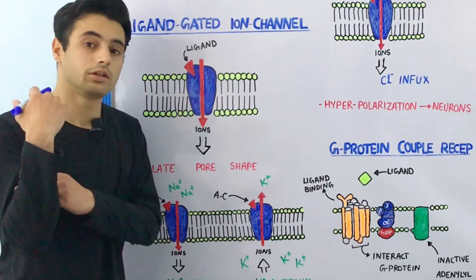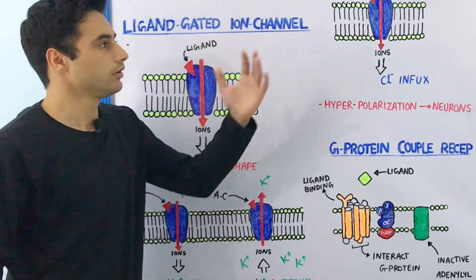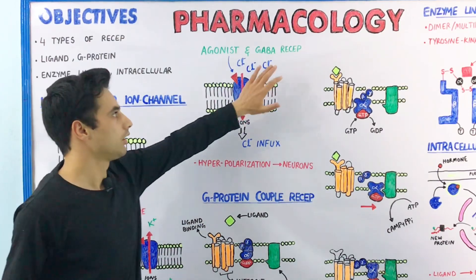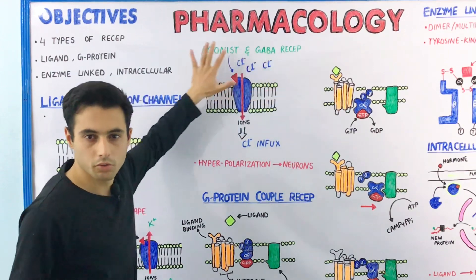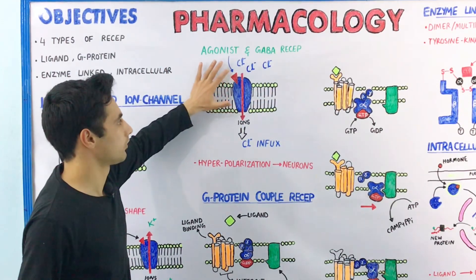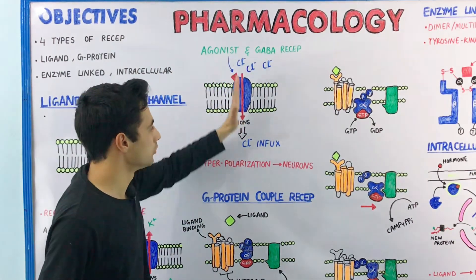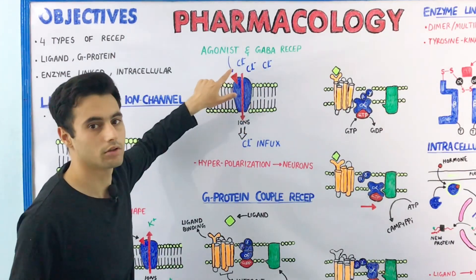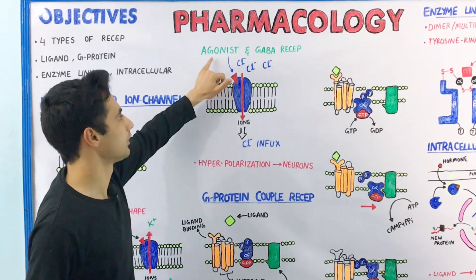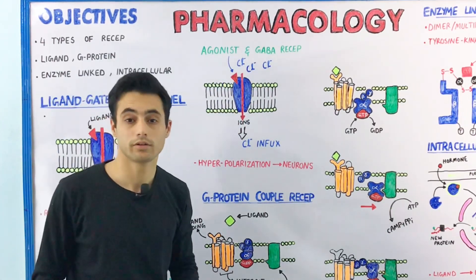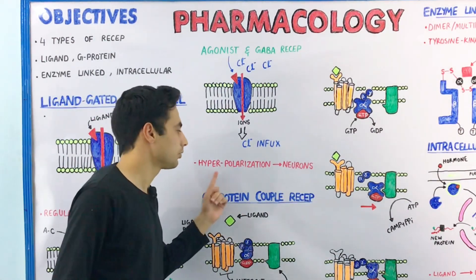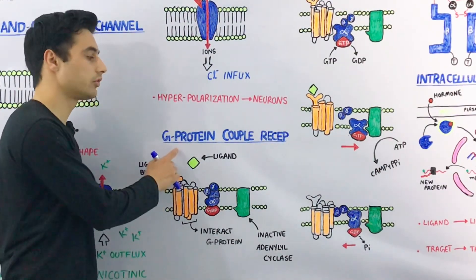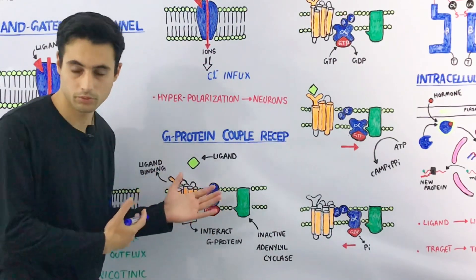The agonist can be any molecule which activates the receptor. When the agonist binds with the GABA receptor, chloride — which is in abundance outside of the cell in the extracellular space — will move inside the cell by opening of these channels, or the pore size is changed when the agonist binds with the GABA receptor. This is used during the hyperpolarization of the neuron.